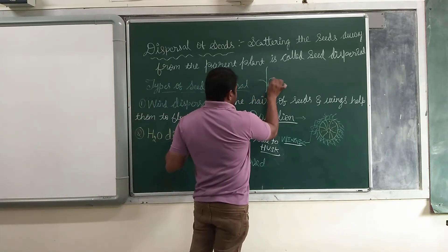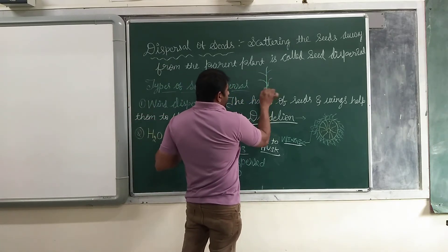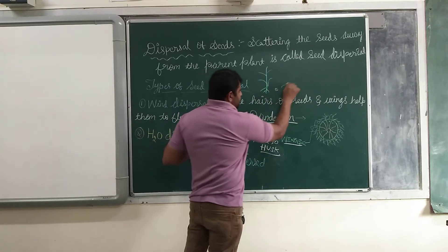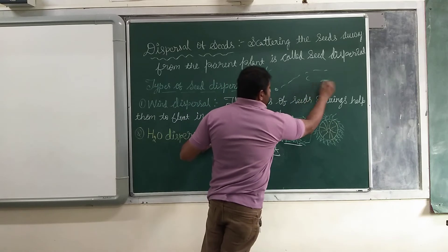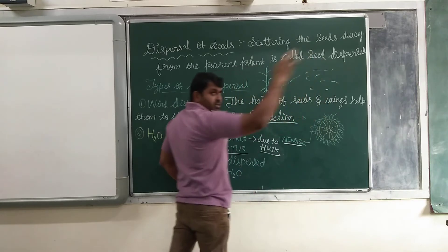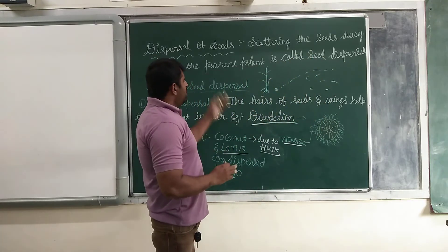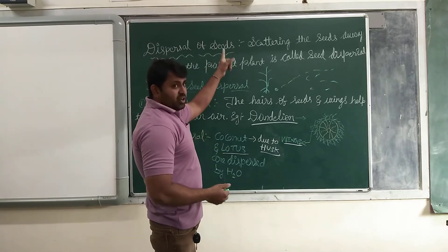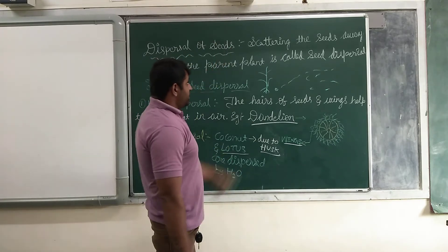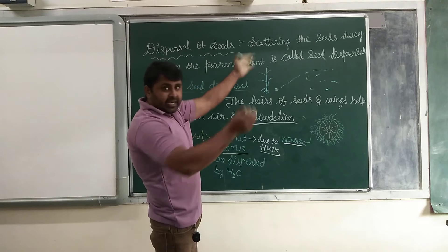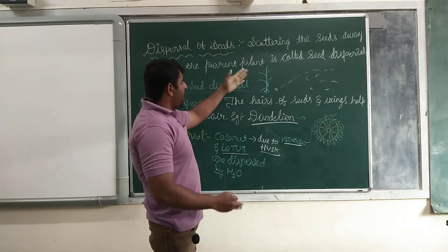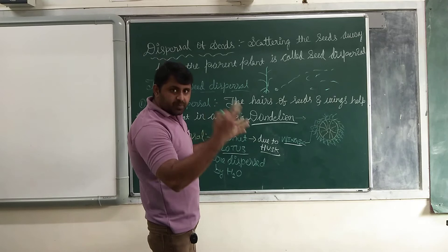Consider this is the parent land. When the seed gets dispersed due to the wind or due to the water, the seed moves away. Scattering the seeds away from the parent land is called dispersal of seeds.